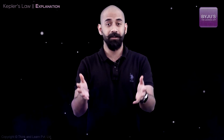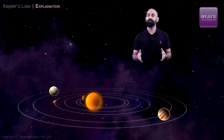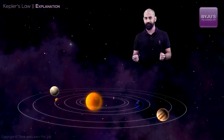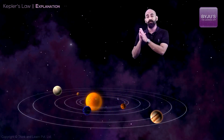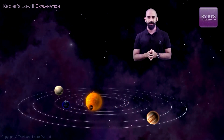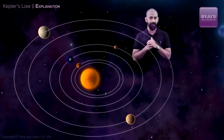Using Tycho Brahe's observations, Kepler deduced a few results which are generally called Kepler's laws. The first law: he observed that all the planets moved around the sun in elliptical orbits, such that the sun was at one of the foci of those orbits. The top view of the solar system would look like this.